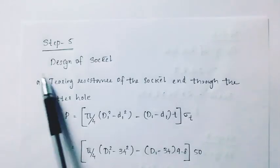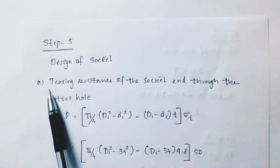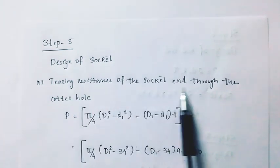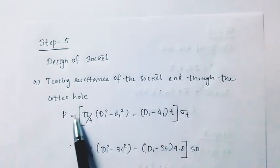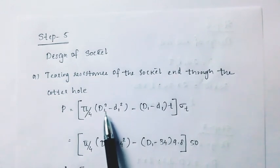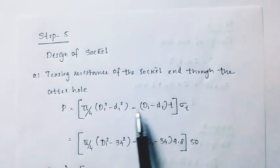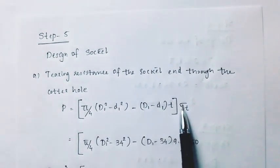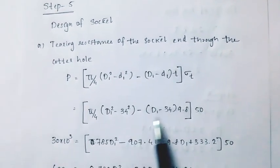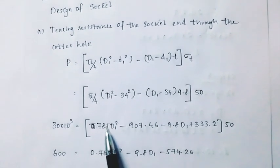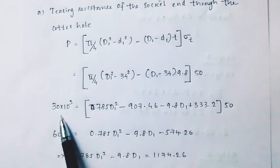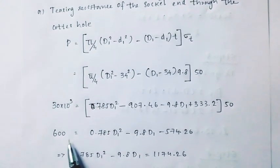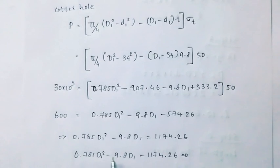Step 5: Design of socket. Tearing resistance of the socket through the cotter hole. P equals pi by 4 into the formula times t into sigma C. Step 6: Substituting values, we have a quadratic equation.